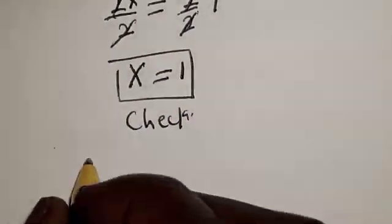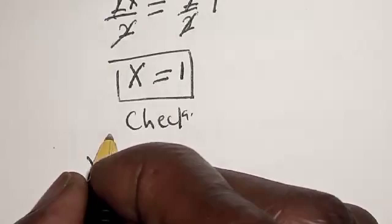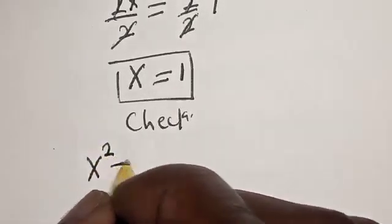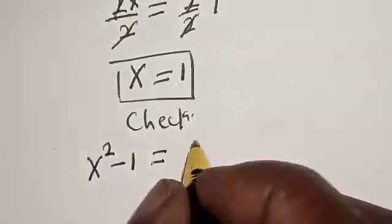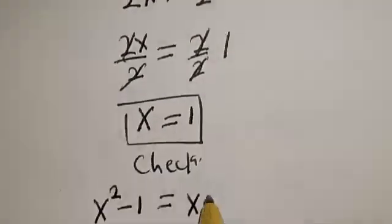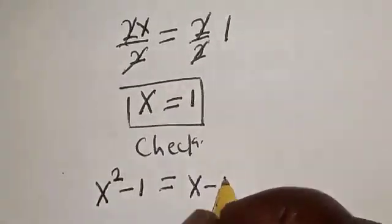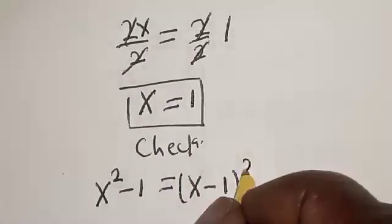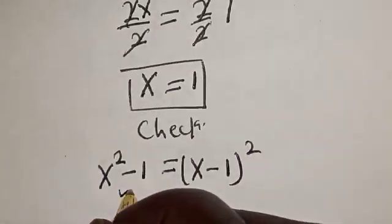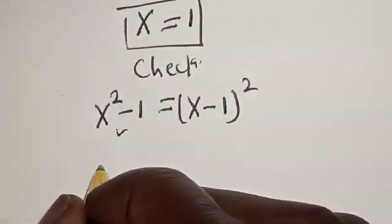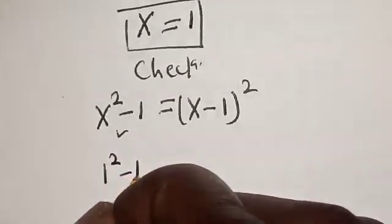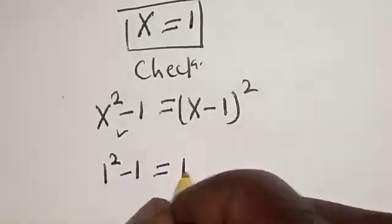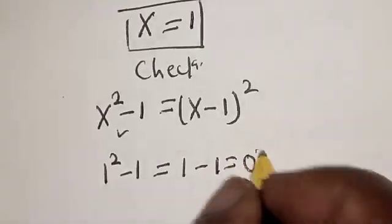We have x square minus 1 equals x minus 1 square. Now consider the left hand side at x equal to 1: 1 square minus 1. This is equal to 1 minus 1, which equals 0.